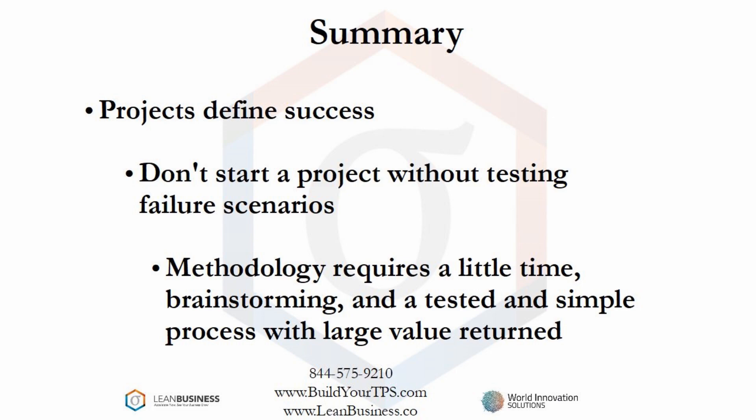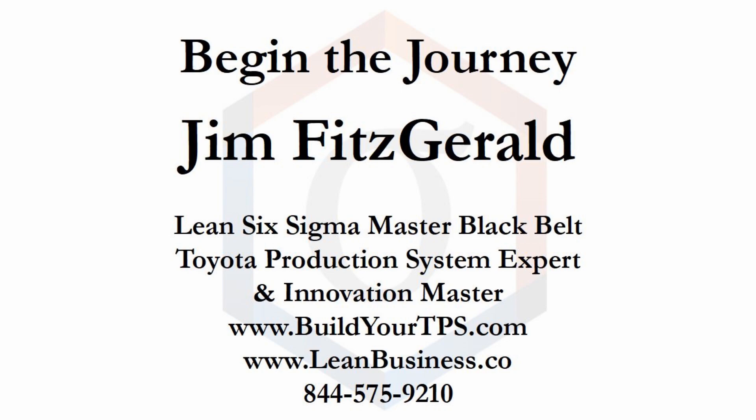This robust and well-used methodology requires a process and brainstorming. It takes a little time and is relatively simple, with a large benefit attached. At the end of this process, you will have identified failure risks, failure impacts, failure causes, current available mitigation controls, and a priority for addressing the risks. I am Jim Fitzgerald, a Lean Six Sigma Master Black Belt, expert on building a production system like Toyota, and an innovation master. Don't let your process-building efforts fail because you have not planned for failure risks. This last slide shows you how you can build your own production system like Toyota.